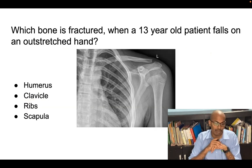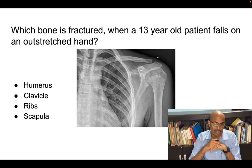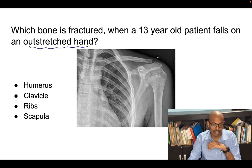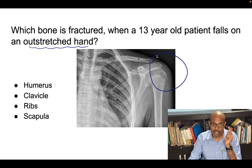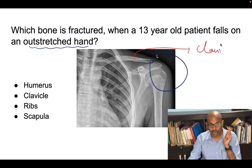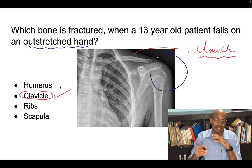They showed a picture of an immature shoulder joint and asked: if a patient falls directly on the shoulder, what bone is fractured? It doesn't matter how the patient falls — the most common bone to be injured or fractured in the body is the clavicle. You should mark the clavicle as the correct answer.